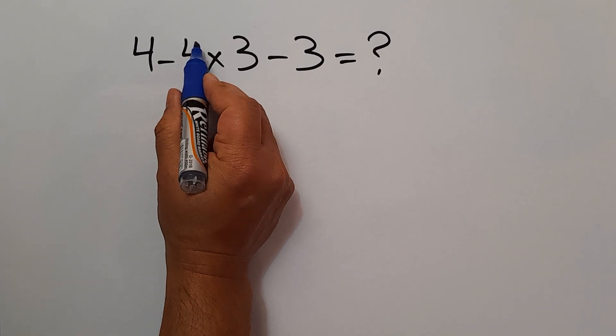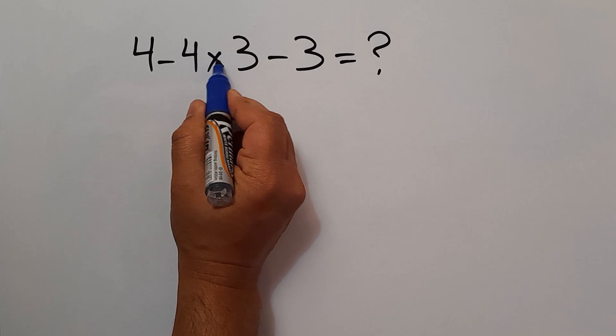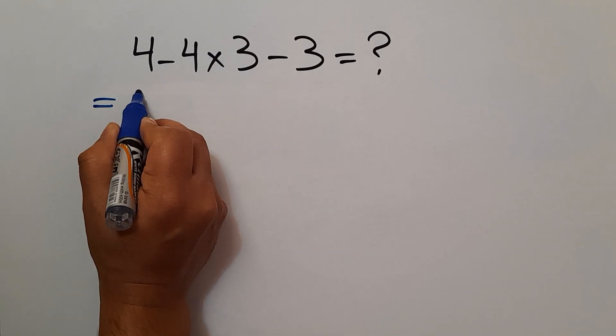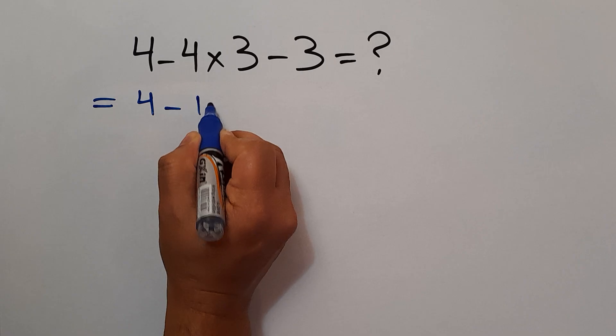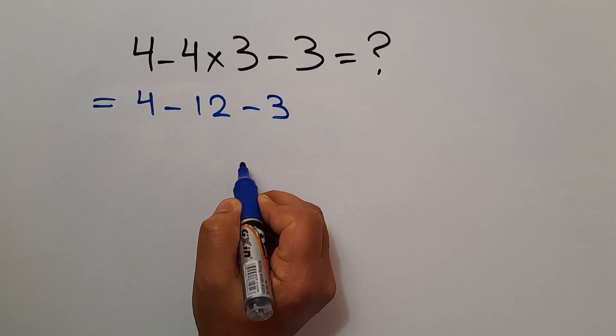so first we have to handle this multiplication. 4 times 3 equals 12. So 4 minus 12 minus 3.